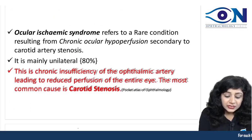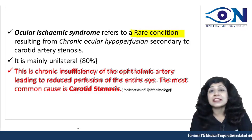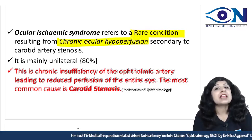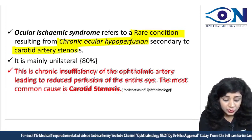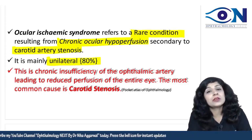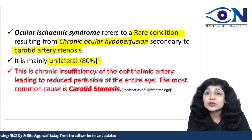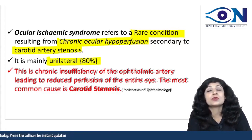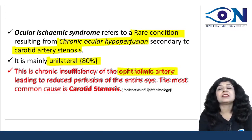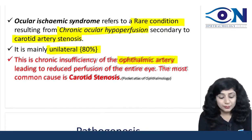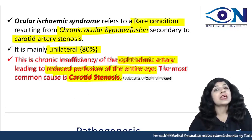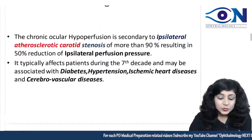Ocular ischemic syndrome is a rare condition — not common, but certainly an emergency. It results from chronic ocular hypoperfusion secondary to carotid artery stenosis. Most of the time it is unilateral — more than 80% of cases are unilateral — and it involves chronic insufficiency of the ophthalmic artery, which is the main blood supply of the eyeball.